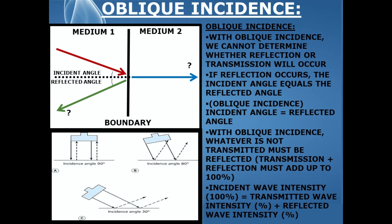With oblique incidence, whatever is not transmitted deeper into the tissue must be reflected — transmission and reflection must add up to 100%. The incident wave intensity equals 100%. The transmitted wave intensity is the portion traveling deeper into the tissue, and the reflected wave intensity is the portion reflected back to the transducer. Transmitted wave percentage plus reflected wave percentage must equal the incident wave intensity: 100%.